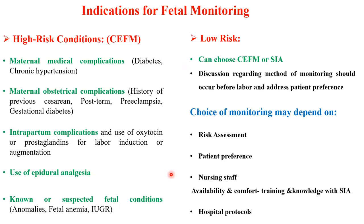Any baby during labor will be monitored either by continuous electronic fetal monitoring or intermittent auscultation. Indications for continuous monitoring include high-risk conditions such as maternal complications like diabetes or hypertension, obstetric complications like previous cesarean or post-term pregnancy, and intrapartum complications like induction or augmentation of labor. From the fetal side, known or suspected fetal conditions like anomalies or IUGR are indications.